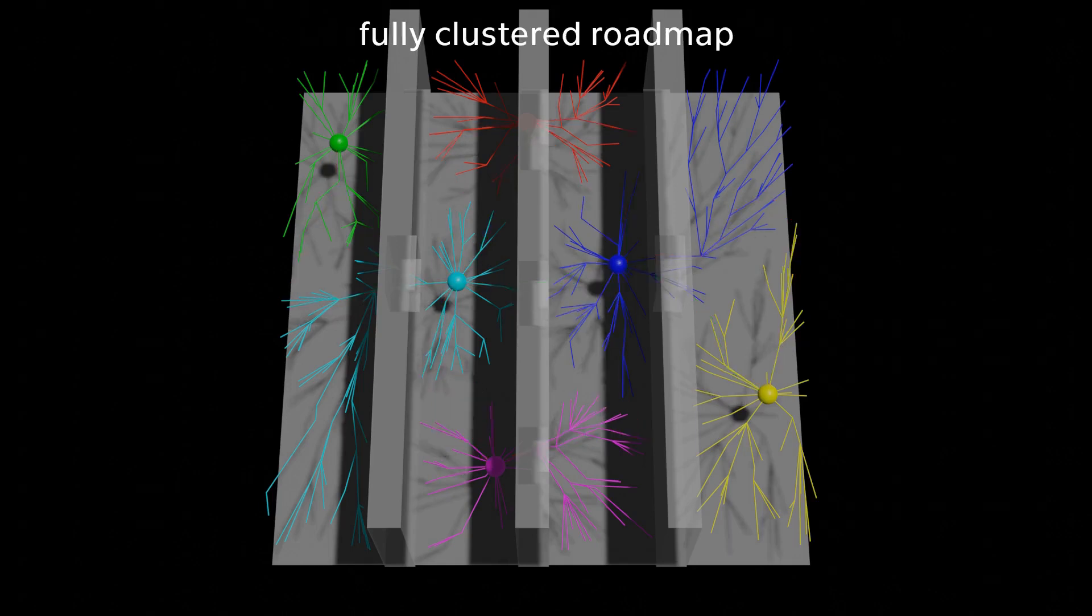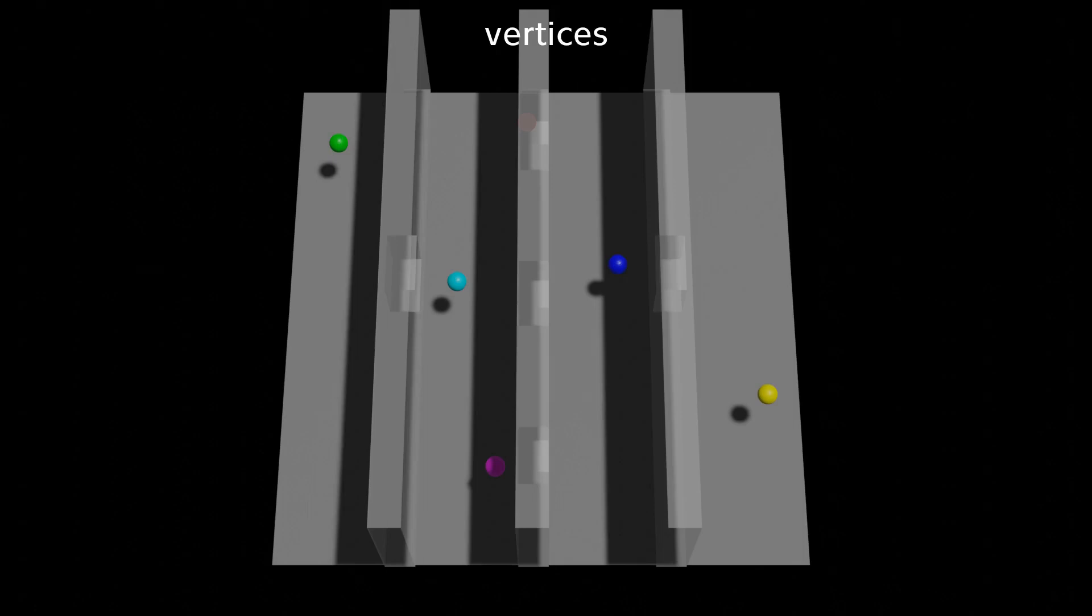New sparse graph is then created with cluster centroids as vertices and shortest minimum connections as edges.